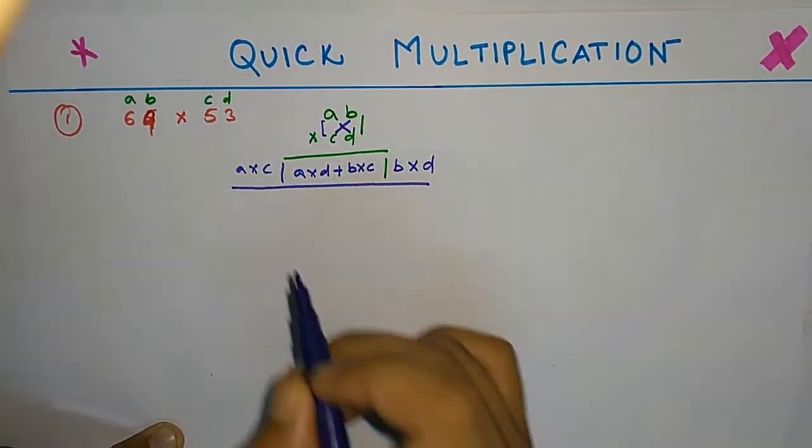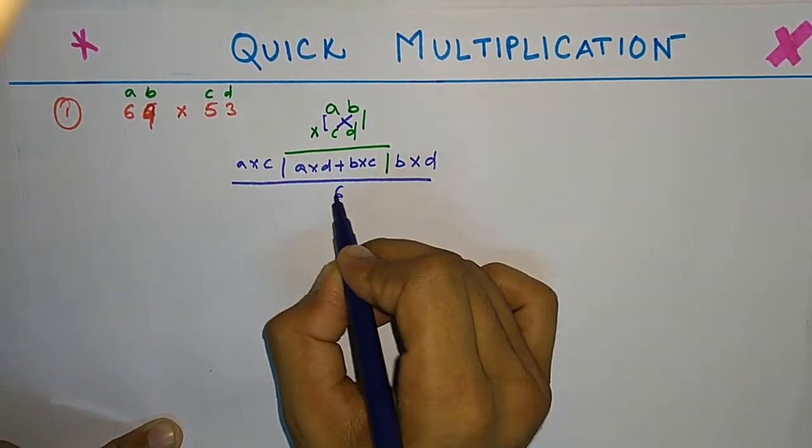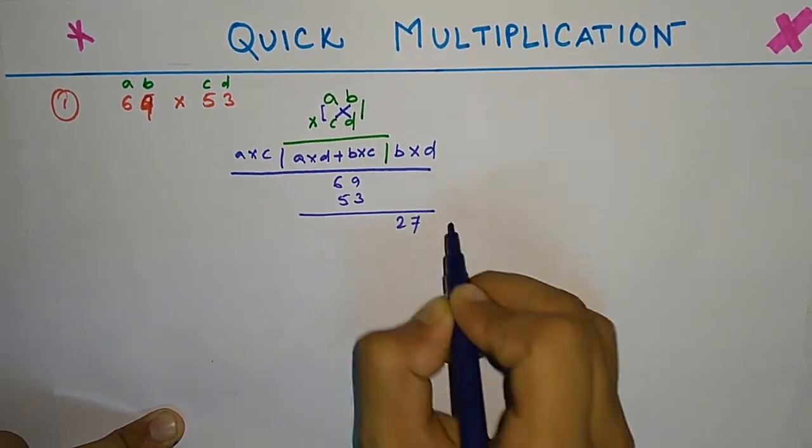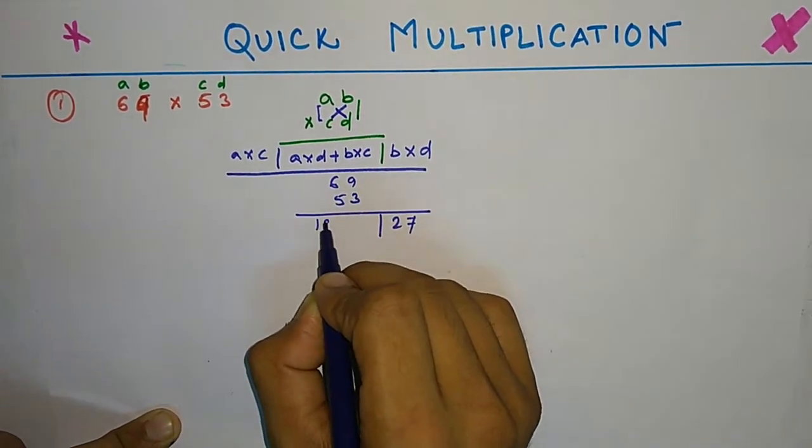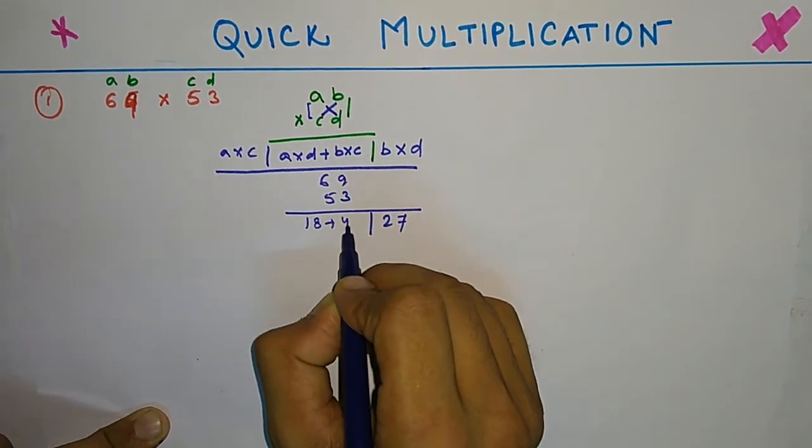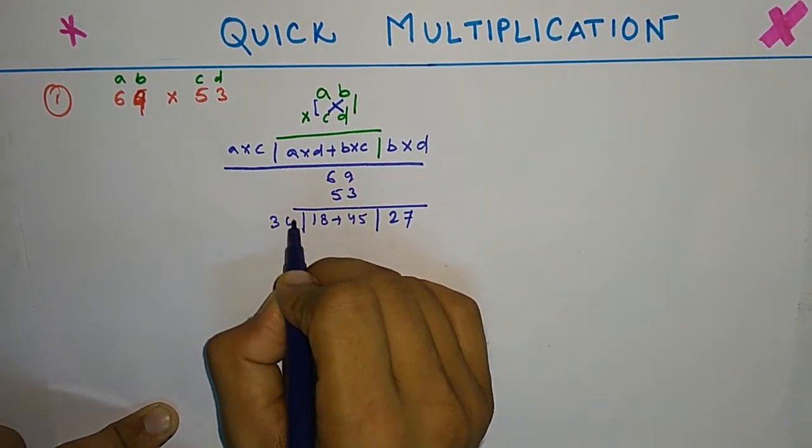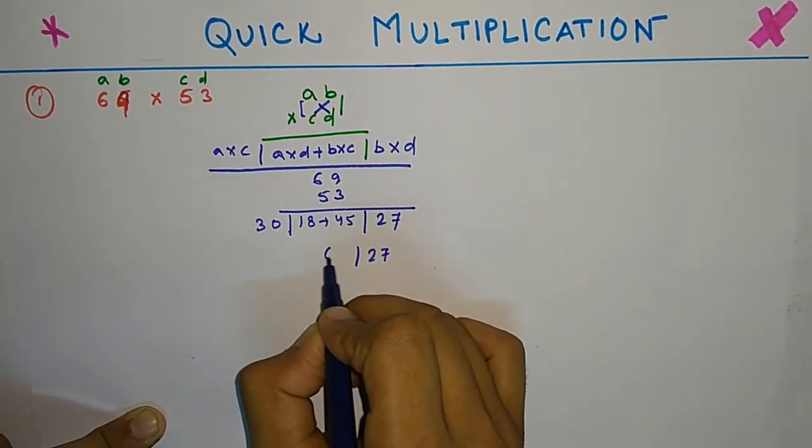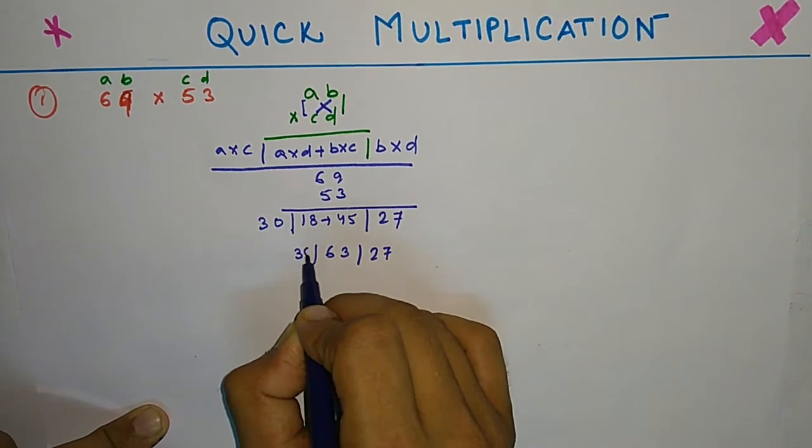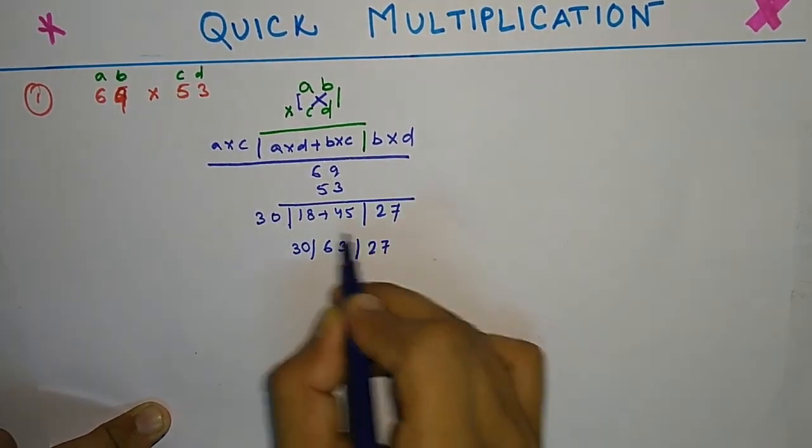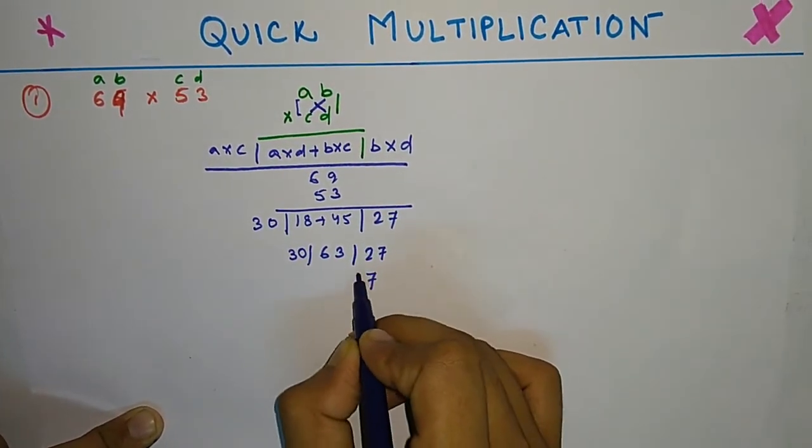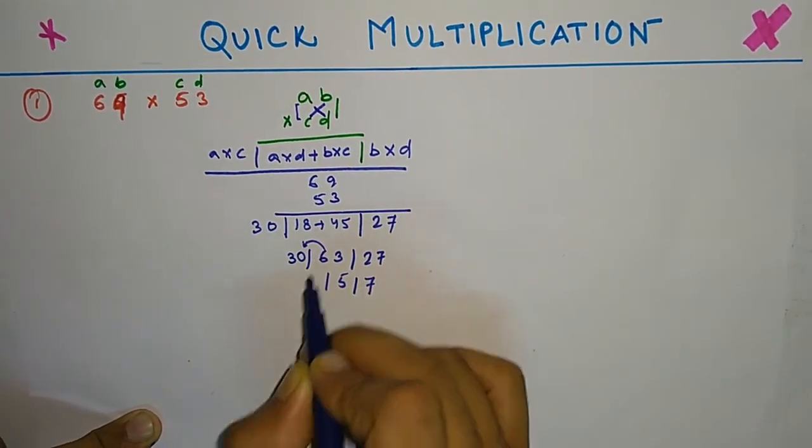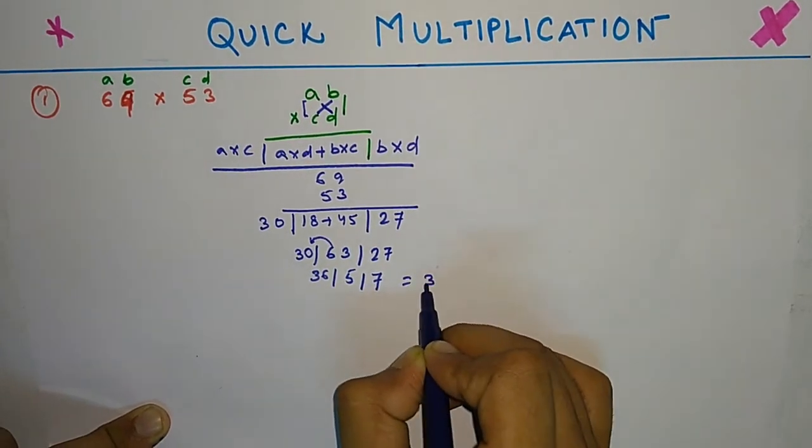So for 69 and 53, we will multiply 9 times 3 equals 27, then 6 times 3 equals 18 and 9 times 5 equals 45, then 6 times 5 equals 30. On adding, we will get 45 and 18 equals 63. This will be 30. Next we will have to carry over the numbers.